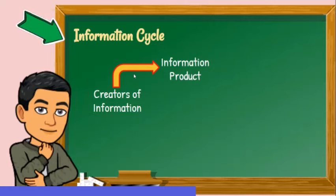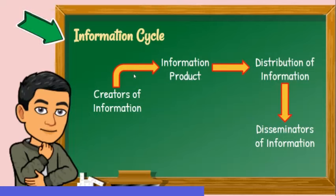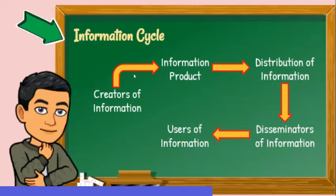The output is distributed by publishers, internet providers, vendors, producers, etc. It may be disseminated in schools, libraries, colleges, and universities, businesses, government, or museums, which are then used by individuals, students, businesspersons, employees, and employers.